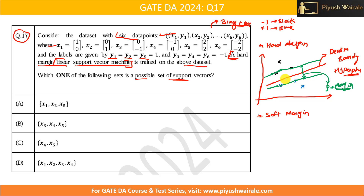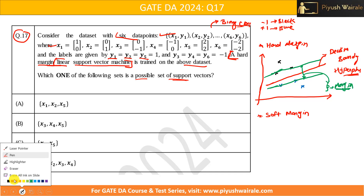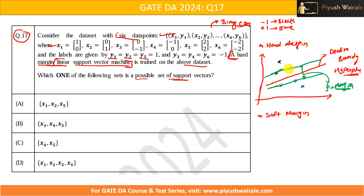Now, what is hard margin? When we draw the decision boundary and the two parallel margin lines, in the case of hard margin, all black data points lie strictly on one side and all blue data points lie strictly on the other side. Not even a single data point crosses the margin. The distance between the two margin lines is maximized. This is what hard margin means.